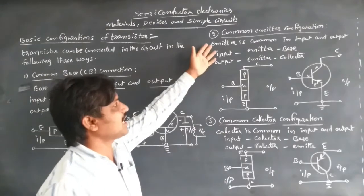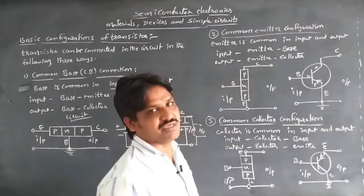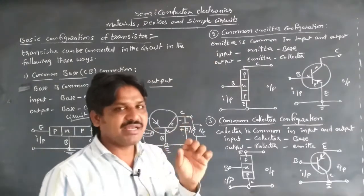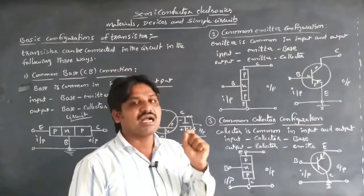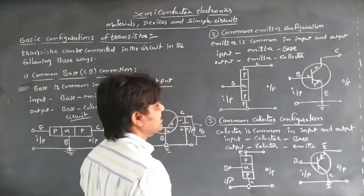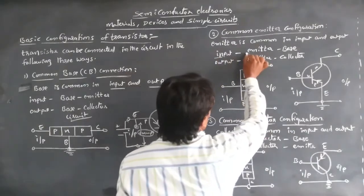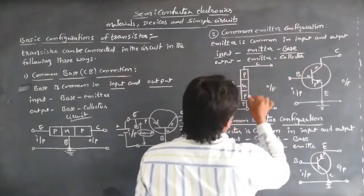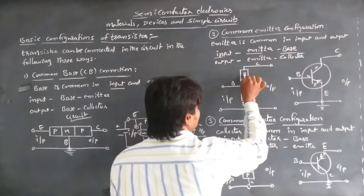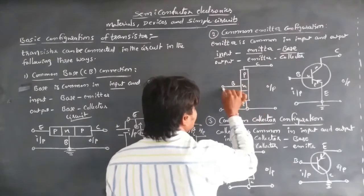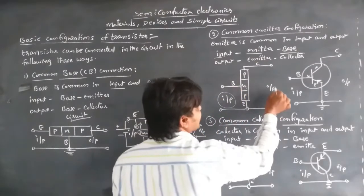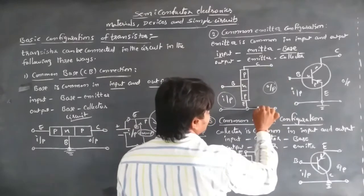The second type of configuration is the common emitter configuration. In this configuration, the emitter is common for both input and output. The input is connected between the base and emitter, and in a PNP transistor the terminals are collector, emitter, and base.